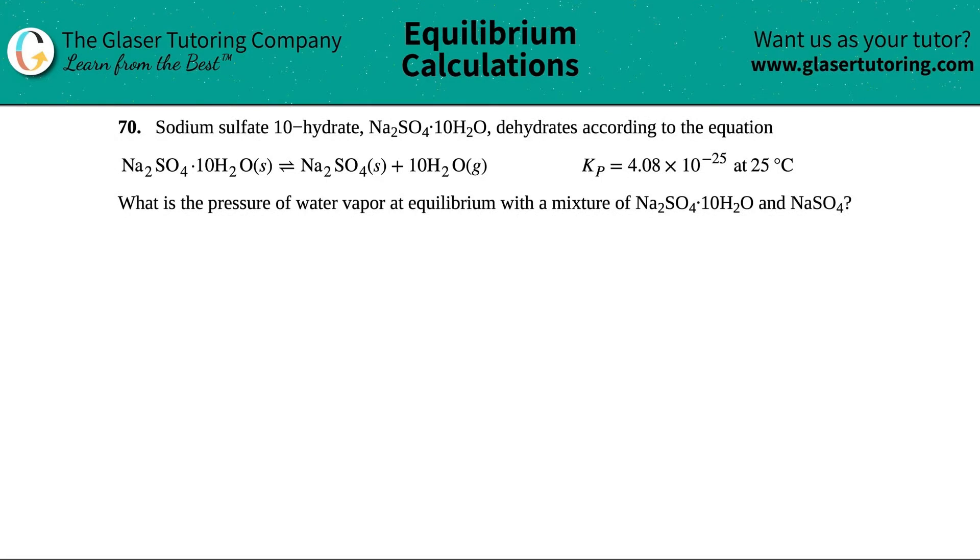Number 70: Sodium sulfate decahydrate, which is Na2SO4·10H2O, dehydrates according to the equation they give us, with a corresponding Kp value of 4.08 times 10 to the negative 25 at 25 degrees Celsius. The question asks: what is the pressure of water vapor at equilibrium with the mixture of Na2SO4·10H2O and NaSO4?